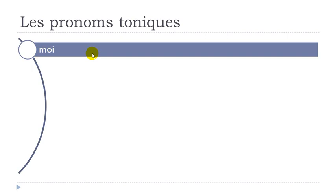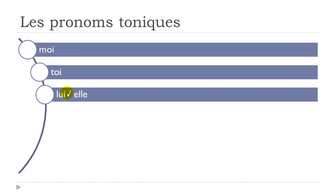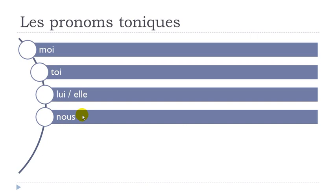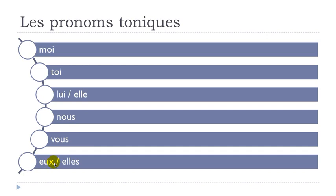Then you get TOI. For the masculine form we get LUI, and for the feminine form we've got ELLE. You can notice that for the masculine it does change — the pronom personnel is IL, but the pronom tonique is LUI. For the feminine form it's the same: ELLE. Good news — same thing for the plural: NOUS and VOUS, just as for the pronom personnel. For the third person of the plural, the masculine form gives you EUX, and the plural feminine is ELLES.